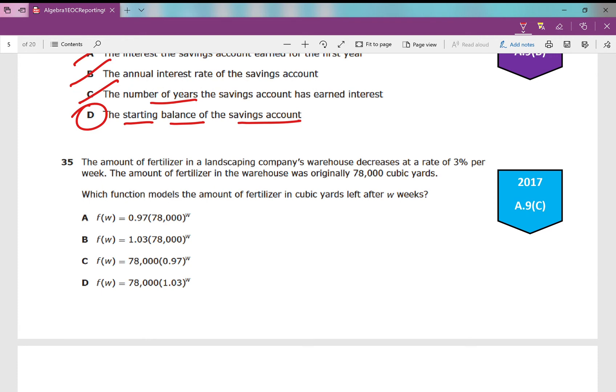Let's go to the next one. We are rocking and rolling through these. The amount of fertilizer in a landscaping company's warehouse decreases at a rate—exponential because it's decreasing at a rate of 3% per week. The amount of fertilizer in the warehouse was originally 78,000 cubic yards. Which function models the amount of fertilizer in cubic yards left after w weeks?